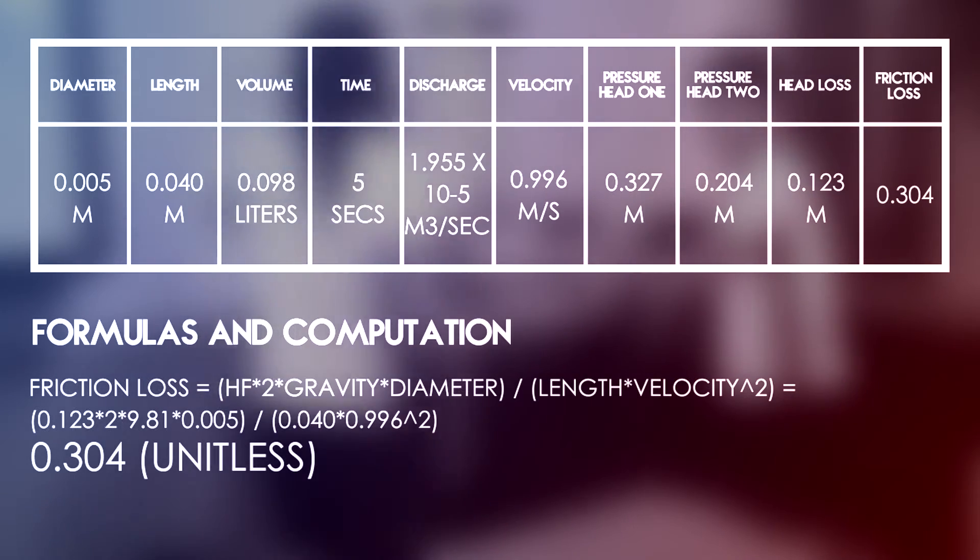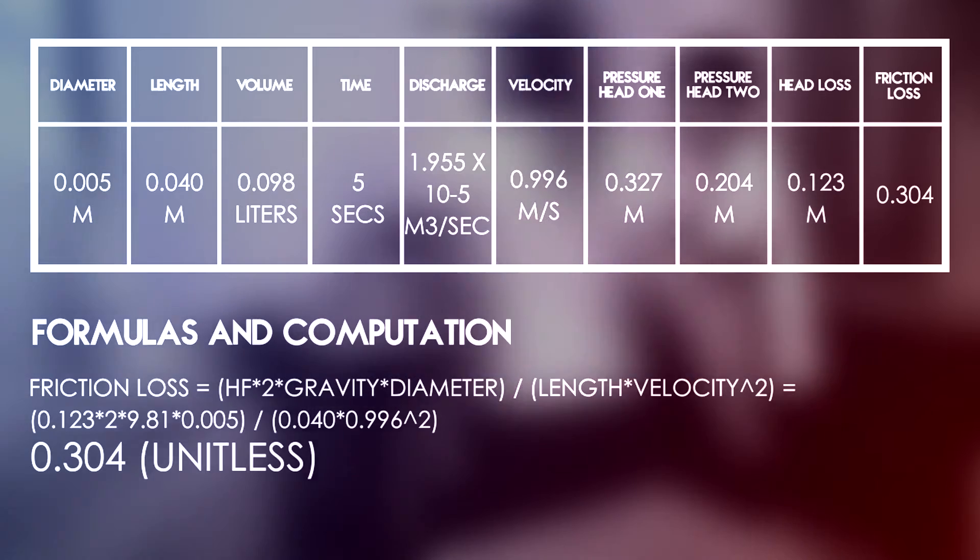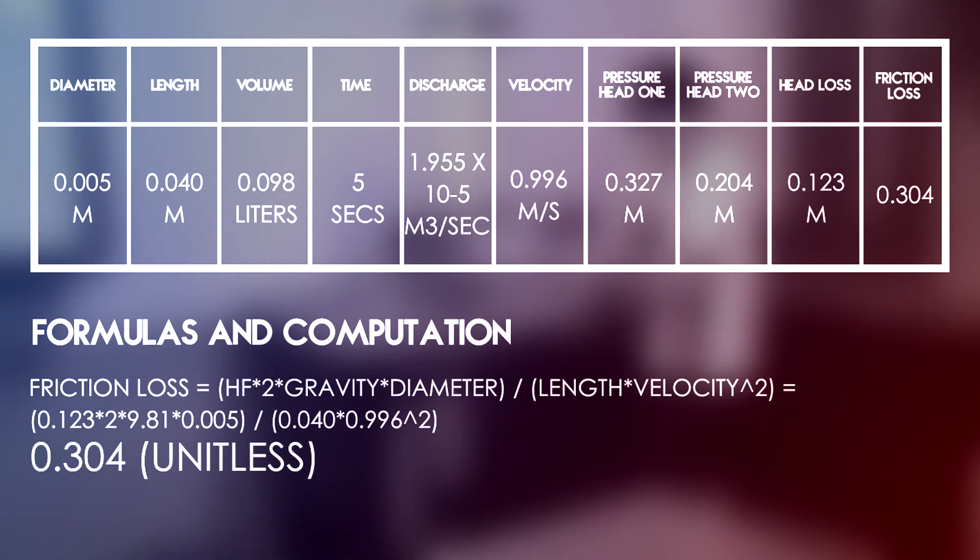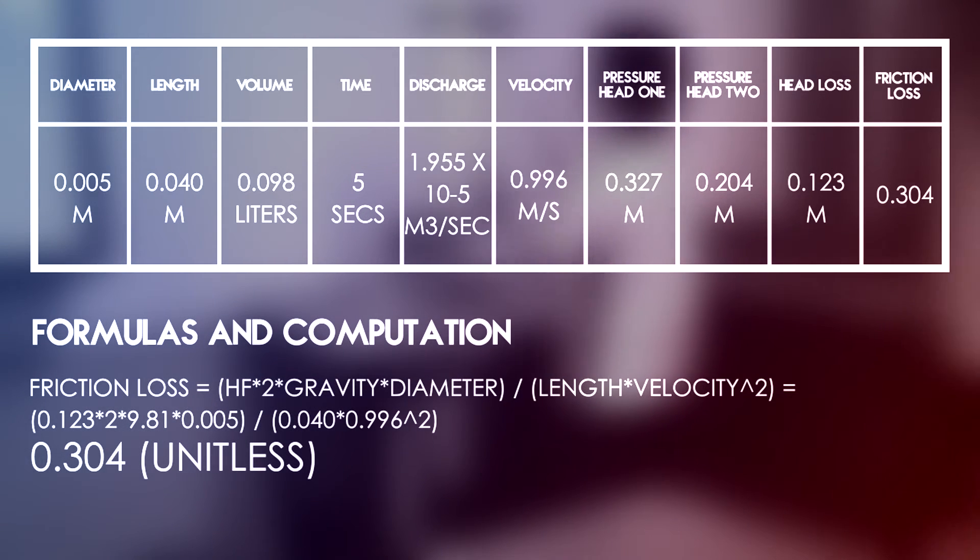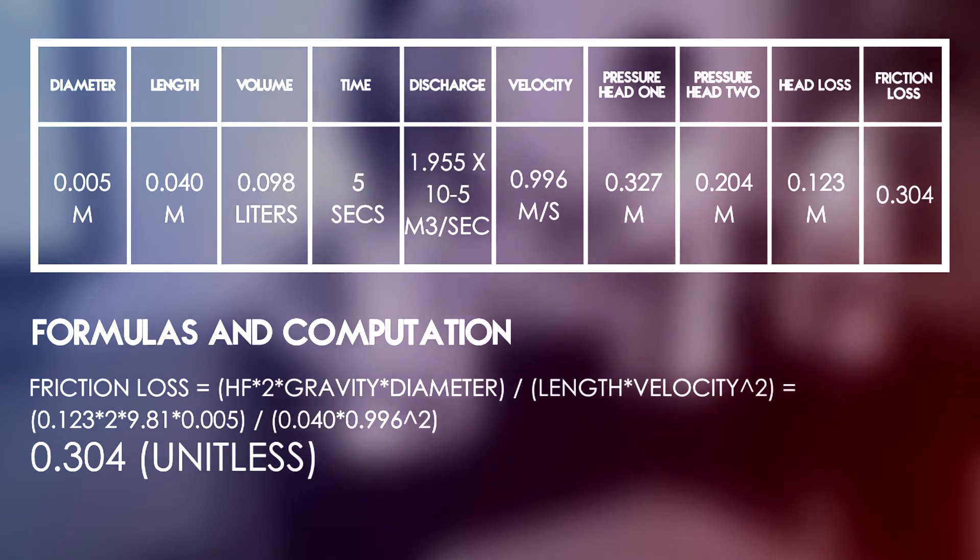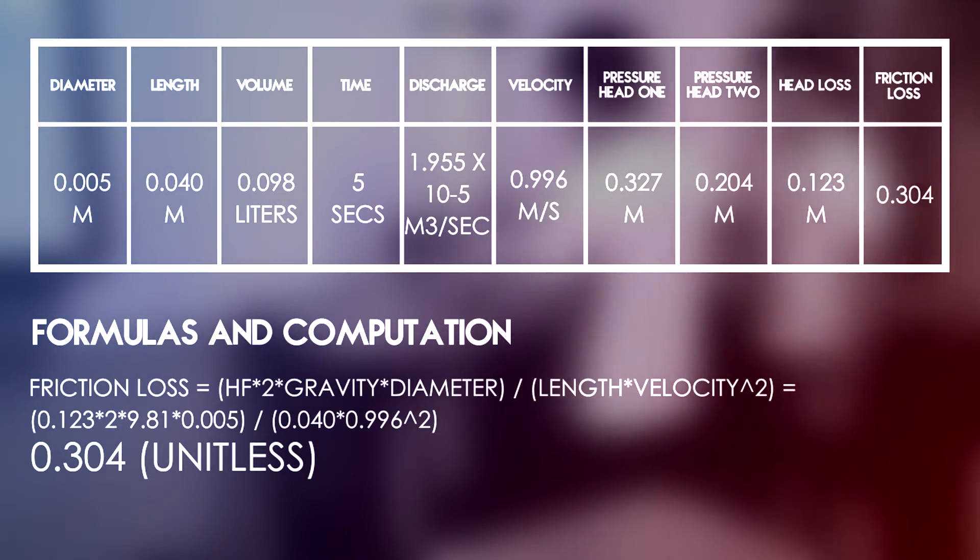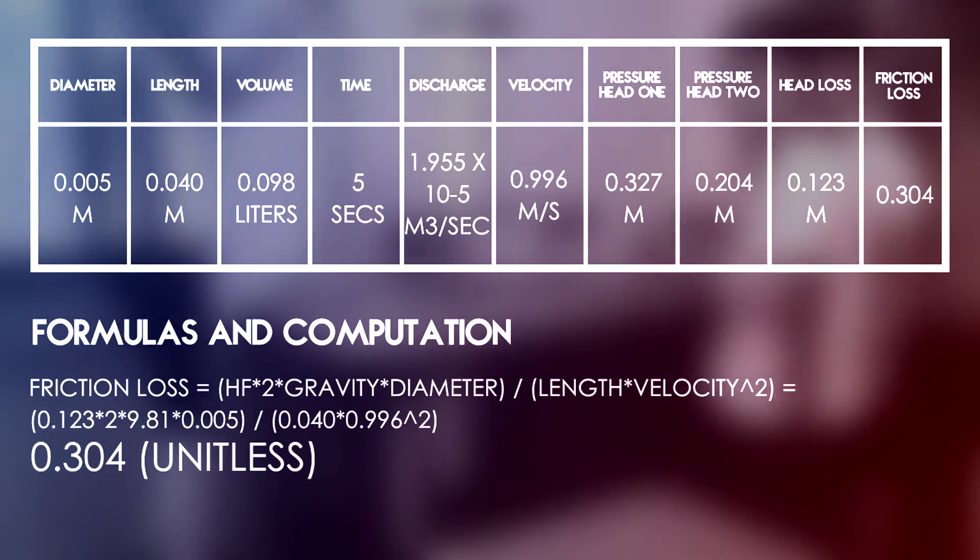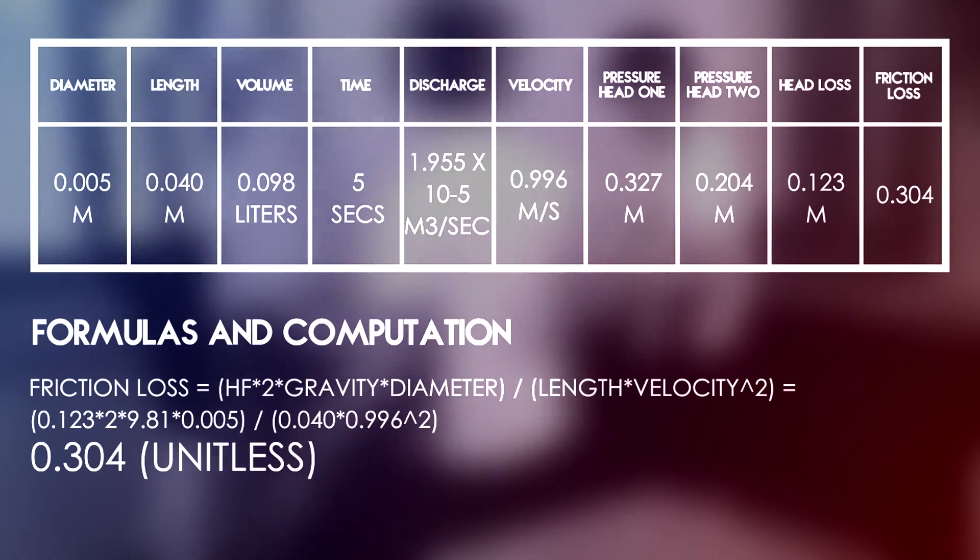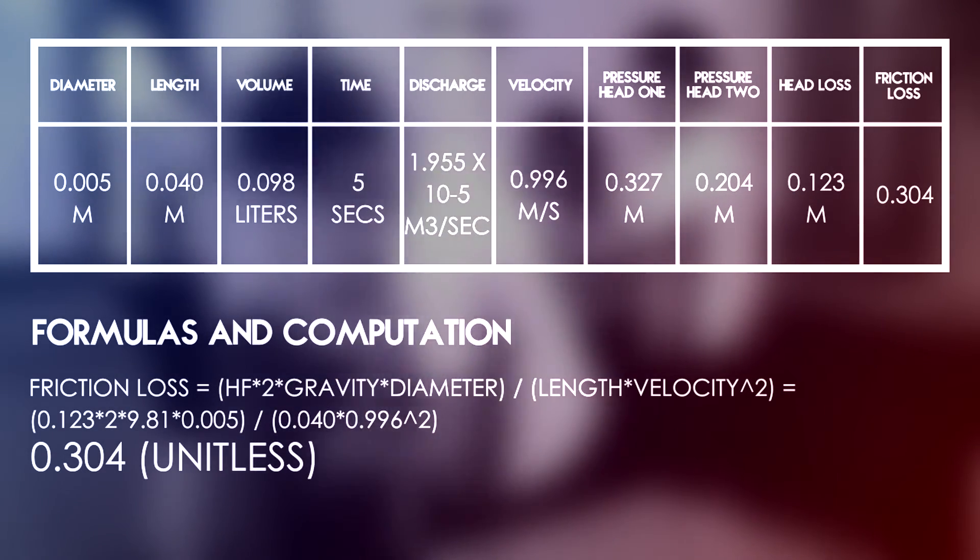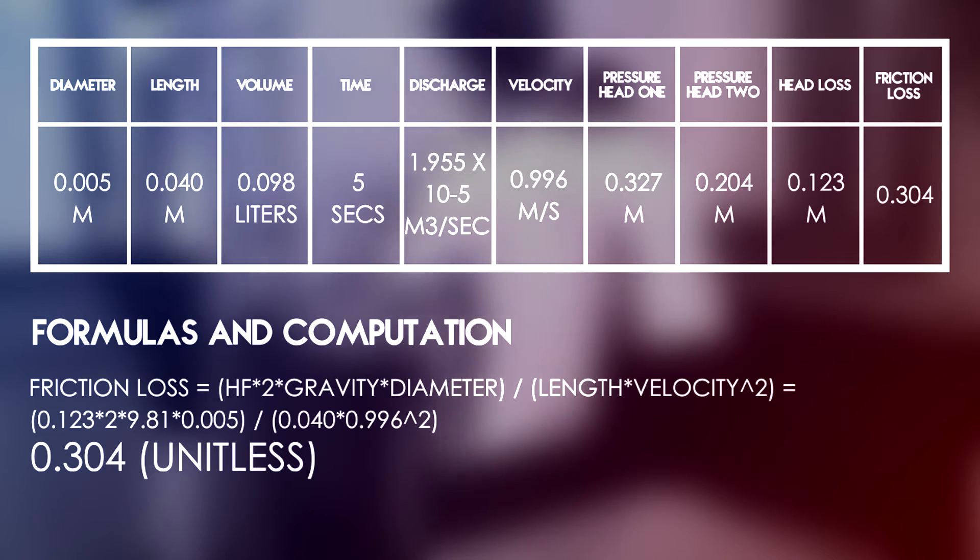F can be solved using the Darcy-Weisbach formula which is F equals HF times the quantity of D over L times the quantity of 2G all over V squared. Substituting the values obtained from this experiment, we can get the value of 0.0304 for F. Same procedure will be done for the 0.007 diameter pipe.